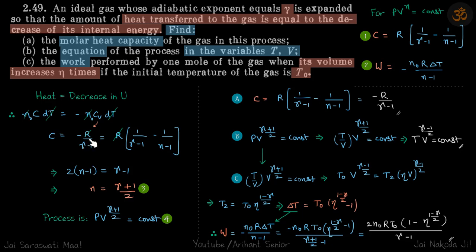R will get cancelled, and what we get is n equals (γ+1)/2. So what we have is a polytropic process of the form PV^((γ+1)/2) = constant. Now we can find all these things quite easily using these formulas.